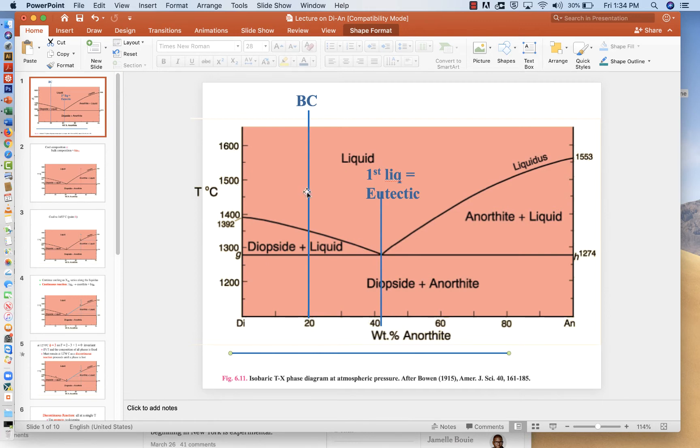It actually doesn't matter what bulk composition we pick anywhere in this system. No matter whether we start here or there or way over here, melting will always begin at the same temperature, 1274, and it'll always look like the eutectic, which is where this liquidus surface for anorthite and diopside meet. And that liquidus is at about 42% anorthite or so.